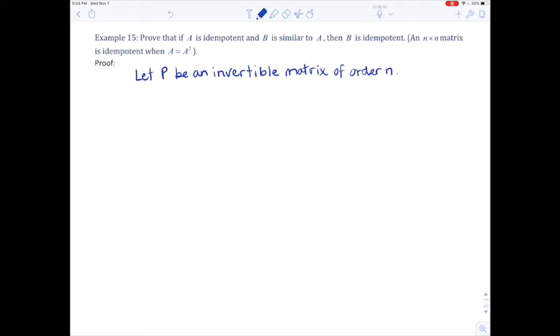So if B is similar to A, what can we say? That means B equals P inverse times A times P, and that's by definition of similarity. All right, so next up, if we square both sides,